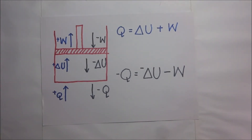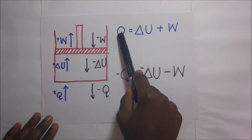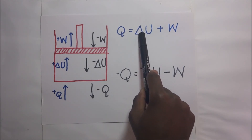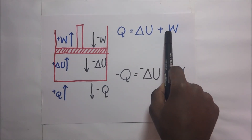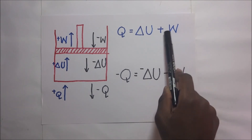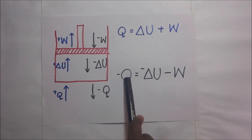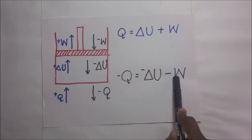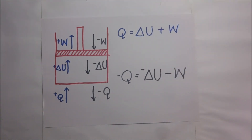To recap: the first law of thermodynamics tries to relate the principle of conservation of energy to how heat supplied to a system relates to internal energy and work done. Heat supplied equals the increase in internal energy plus the work done by the system on its surroundings. Positive Q means energy transferred from surrounding to system. Positive U represents an increase in internal energy. Positive W means work done by the system as it expands. Negative Q means energy transferred from system to surrounding. Negative U means a decrease in internal energy. Negative W means work done on the system as the surrounding compresses it.